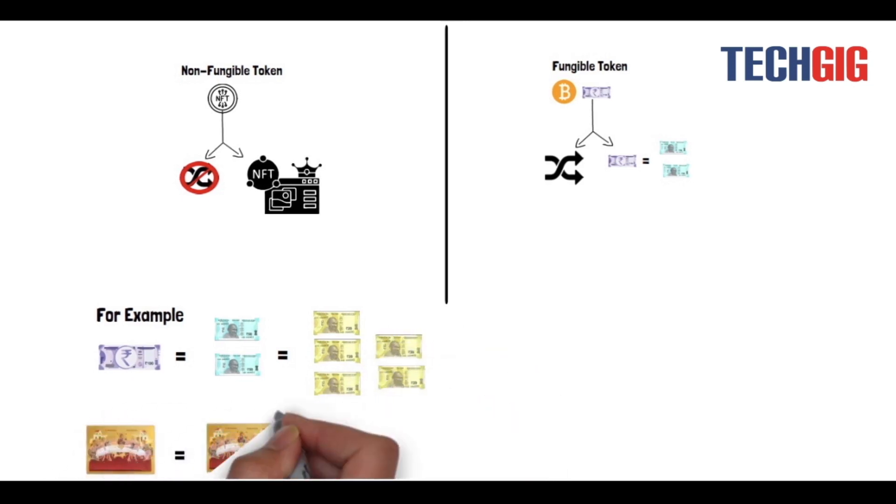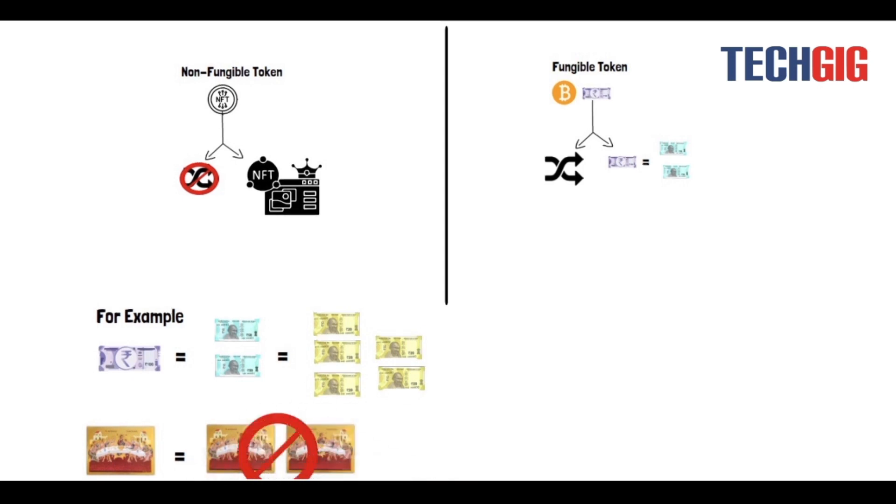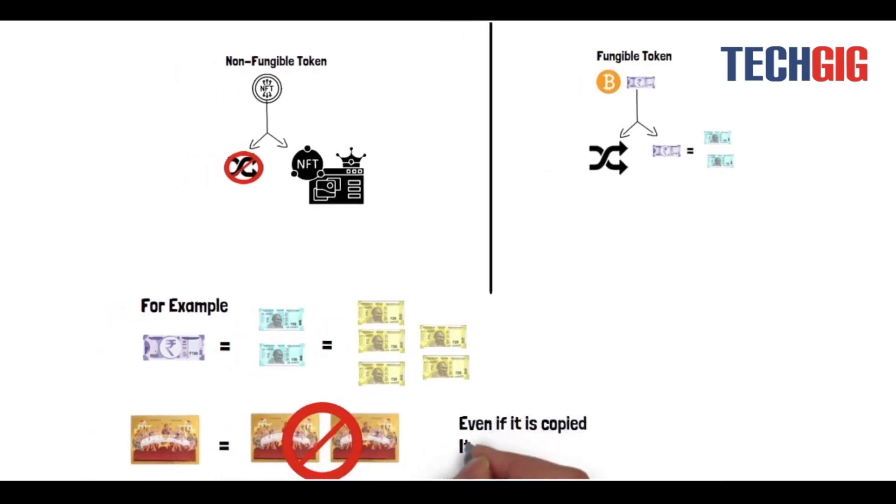But painting of Last Supper is non-fungible, it can't be generated into bulk. Even if it is copied it will not be authentic.